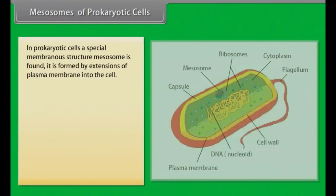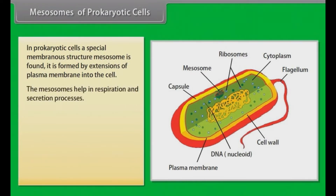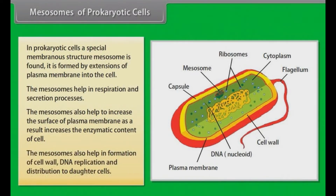In prokaryotic cells, a special membranous structure called mesosome is found. It is formed by extensions of the plasma membrane into the cell. The mesosomes help in respiration and secretion processes, and also help to increase the surface area of the plasma membrane, thereby increasing the enzymatic content of the cell. The mesosomes also help in the formation of the cell wall, DNA replication, and distribution to daughter cells.